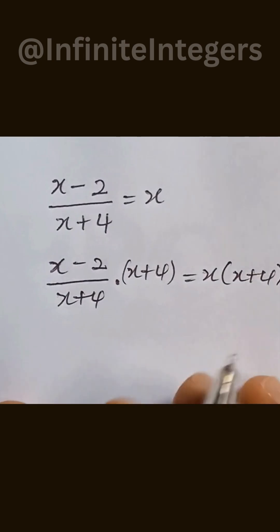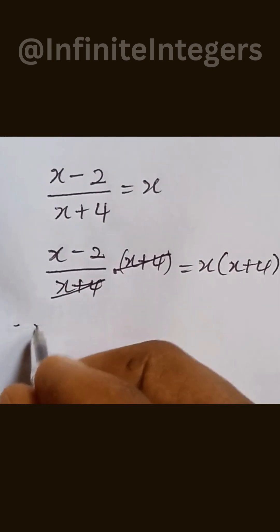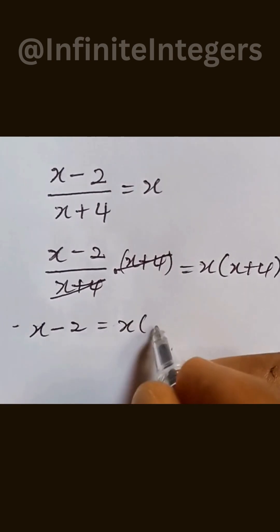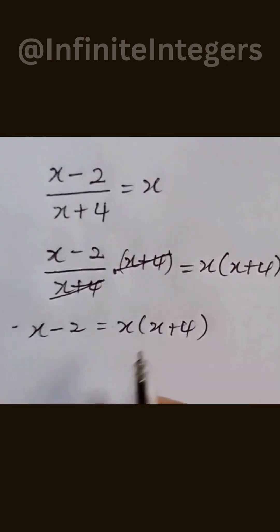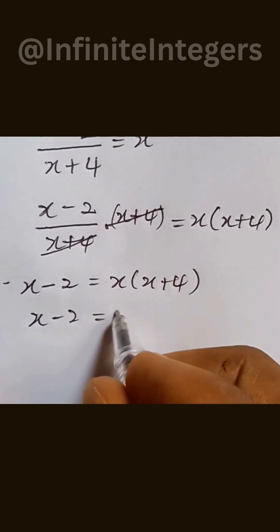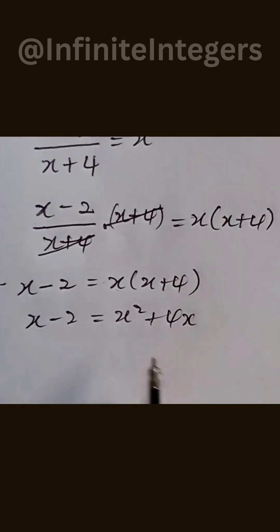So this cancels out with this. We have x minus 2 equal to x into bracket x plus 4. This gives us x minus 2 equal to x squared plus 4x.